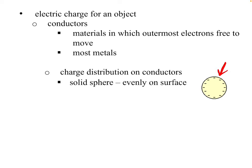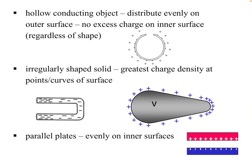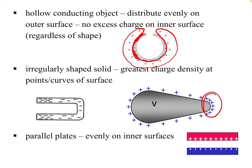The charges spread evenly on the surface, because that's the way they can get furthest away from each other without actually leaving the object — unless they're touching another conductor. If it's a solid flat conducting plate, the charge is just evenly on the surface. If it's hollow, they'll distribute evenly on the outer surface, not the inner surface, because on the outer surface they get furthest from each other. For an irregularly shaped solid, the greatest charge density will be at the sharpest points and curves of the surface.